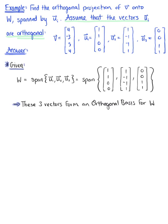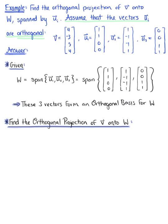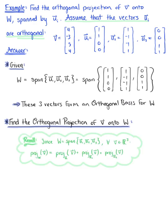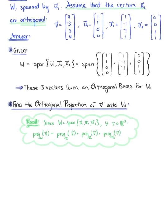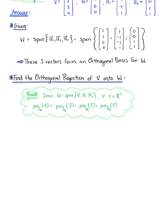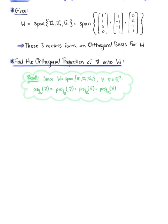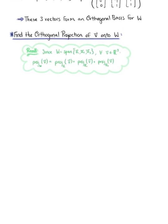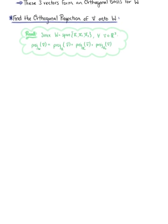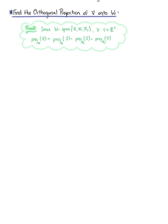This allows us to apply the following definition to find the projection of vector v onto subspace W. The projection of vector v onto subspace W is going to be equal to the sum of the projections onto each of the vectors in subspace W. We are going to find the orthogonal projection by computing the individual projections and then taking their sum.